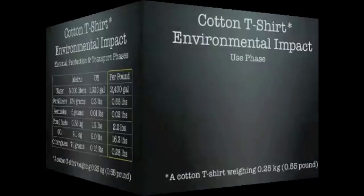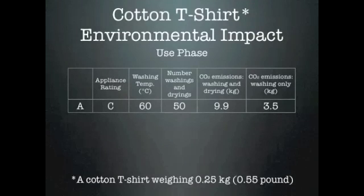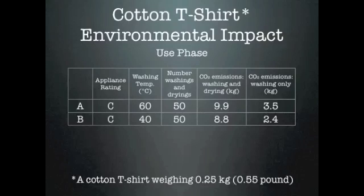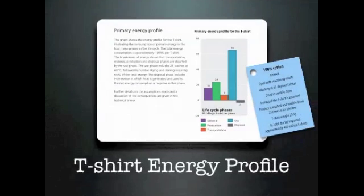The same study also examined the impact of the use phase and found that the washing temperature and use of a dryer could have as much or more impact as the other life cycle phases put together. In the worst case scenario, washing with a less efficient machine at 140 degrees Fahrenheit and using a less efficient dryer, the greenhouse gas emissions are five times greater from the use phase than if the t-shirt is washed in cold water and air-dried.